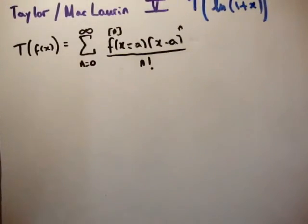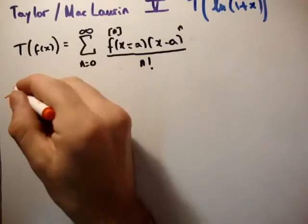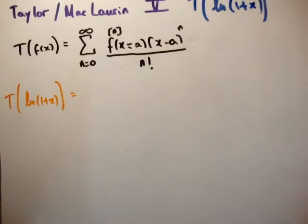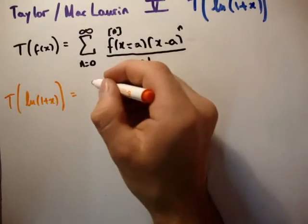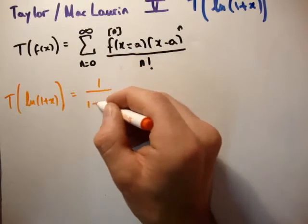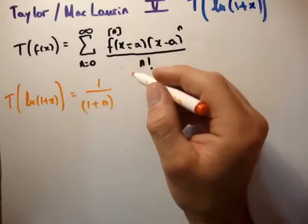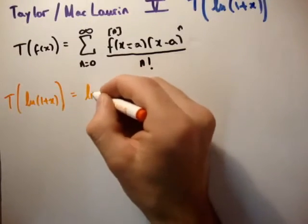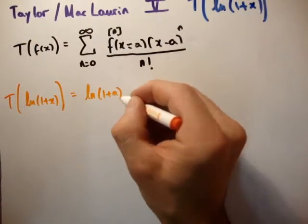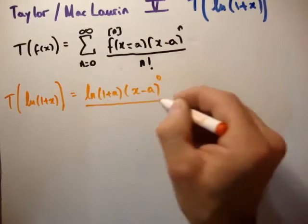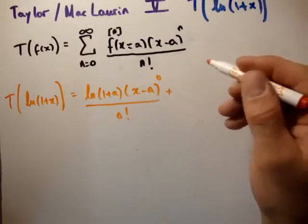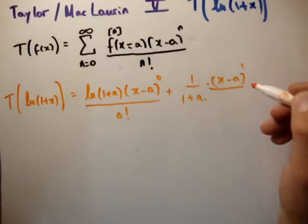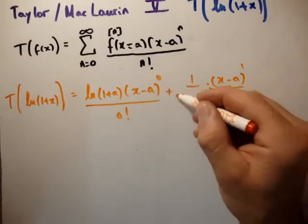So now that we've gotten that, we're ready to evaluate our Taylor series. The Taylor series of the natural logarithm of 1 plus x is equal to the following. So it's equal to 1 over 1 plus a. Oh, what am I doing? No, that's completely incorrect. So we start off with the natural logarithm of 1 plus a times x minus a to the 0 divided by 0 factorial, which you know is 1, plus 1 over 1 plus a times x minus a to the 1 divided by 1 factorial, and so on. So we'll do one more.